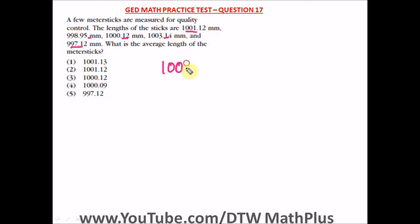So we have 1001.12 plus 998.95 plus 1000.12 plus 1003.4 then plus 997.12 and divide all these by 5.